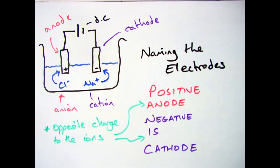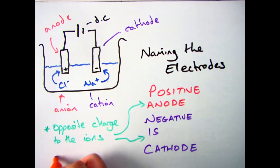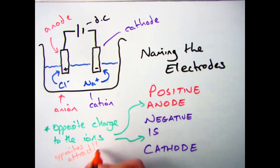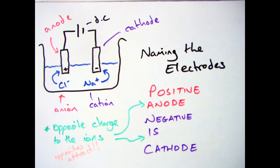In summary: we use direct current, which is your electrical energy, to split up your electrolyte — for example, liquid sodium chloride. When that happens, the positive cations will go to the negative cathode and negative anions will move to the positive anode. They will turn back into their original elements, so sodium will turn back into the metal and chlorine will turn back into chlorine gas.